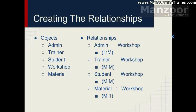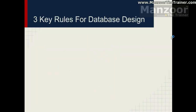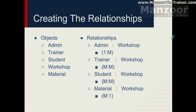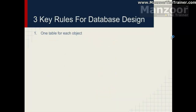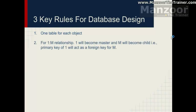In this video we will see how to convert objects and relationships into a database design. There are three key rules to remember. The first rule is one table for each object. Say you have admin, trainer, student, workshop, and material — five objects, so you get five tables.